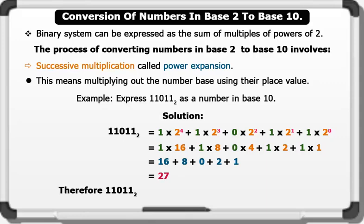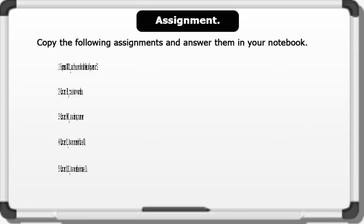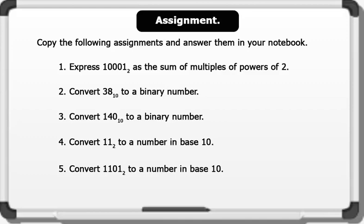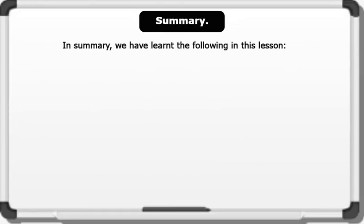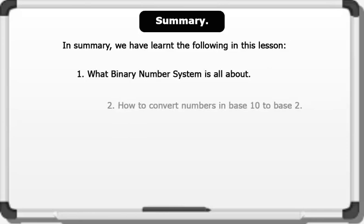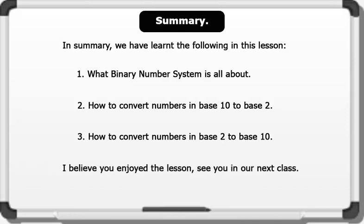Therefore, 11011 in Base 2 equals 27 in Base 10. Wow, that's very good! Assignment: pause the video, copy the following assignments and write the answers in your notebook. In summary, we have learned: 1. What the binary number system is all about. 2. How to convert numbers in Base 10 to Base 2. 3. How to convert numbers in Base 2 to Base 10. I believe you enjoyed this lesson — see you in our next one!